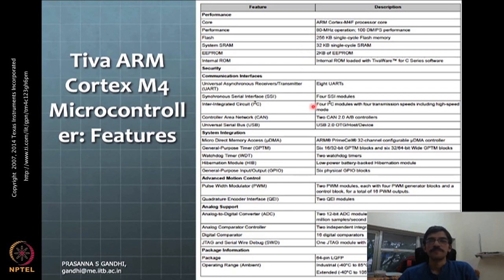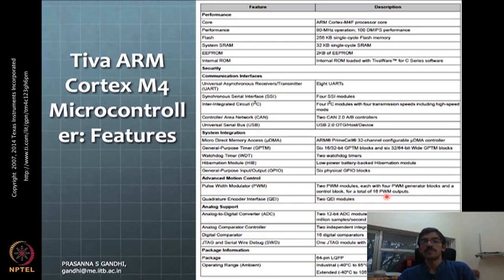There are memory details and communication details. What is more important for us from a mechatronics system perspective is the advanced motion control features. It has PWM interfaces — 2 modules each with 4 PWM generators, so there are 8 PWM generators with a total of 16 PWM outputs. There may be something more we need to see in detail about why they call it 16 PWM outputs.